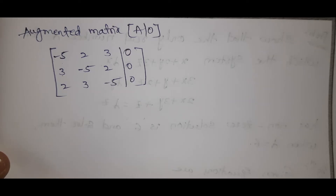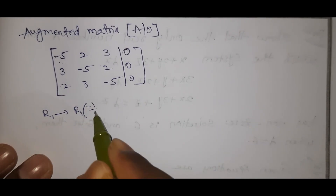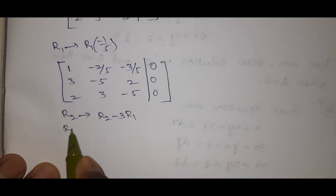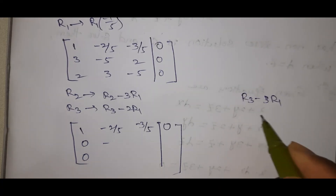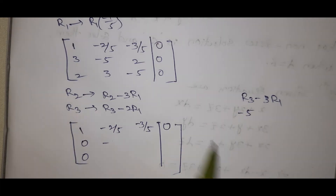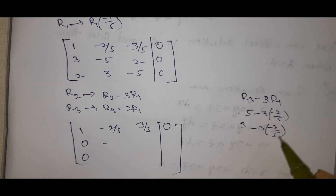Apply R1 → R1 × (−1/5), giving first row (1, −2/5, −3/5). Then R2 → R2 − 3R1 and R3 → R3 − 2R1. For R2: (3−3, −5−3×(−2/5), 2−3×(−3/5)) = (0, −5+6/5, 2+9/5). For R3: (2−2, 3−2×(−2/5), −5−2×(−3/5)) = (0, 3+4/5, −5+6/5).